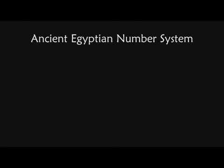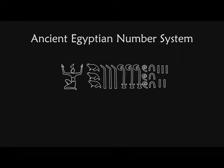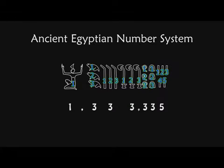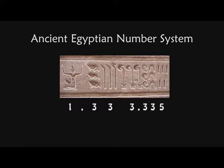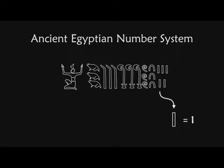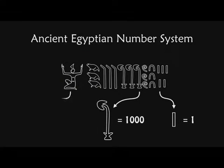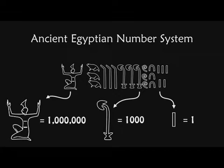We're going to start by looking at the ancient Egyptian number system using hieroglyphs. If you recorded numbers in ancient Egypt, you would be using symbols. This number is 1,333,335. Here it is on a wall. The staff is worth 1. The lotus, 1,000. The god with outstretched arms, 1,000,000.